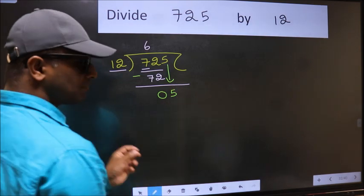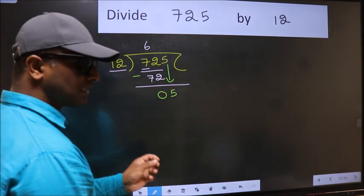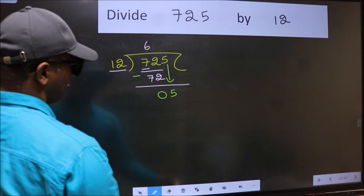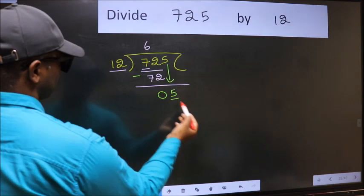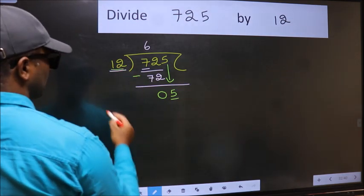After this step, the mistake happens. And the mistake is this. Here we have 5 and here 12.